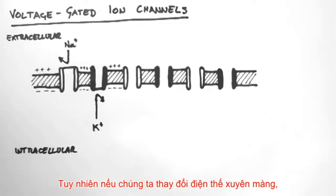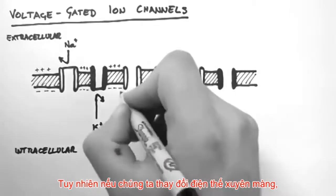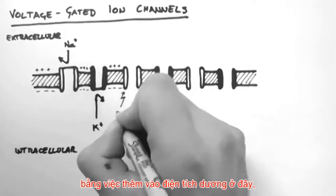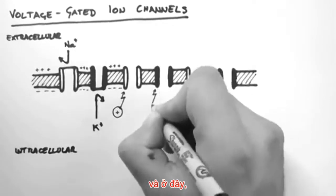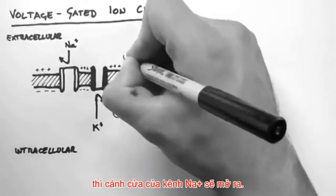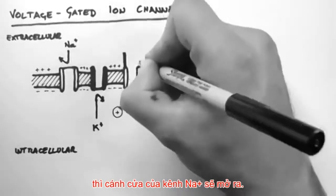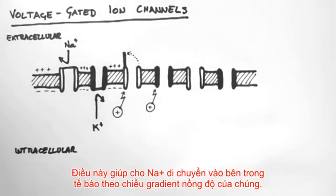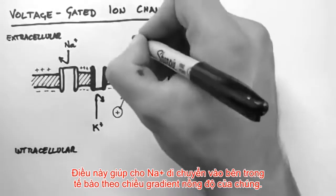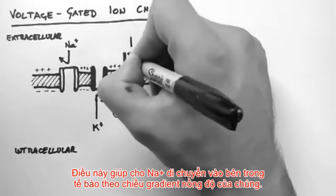However, if we change the voltage across the membrane by adding positive charges here and here, then this gate flips open on the sodium channel. And this allows sodium to flow into the cell, down its concentration gradient.